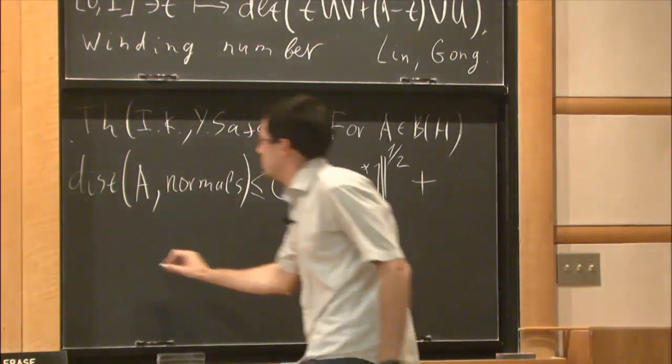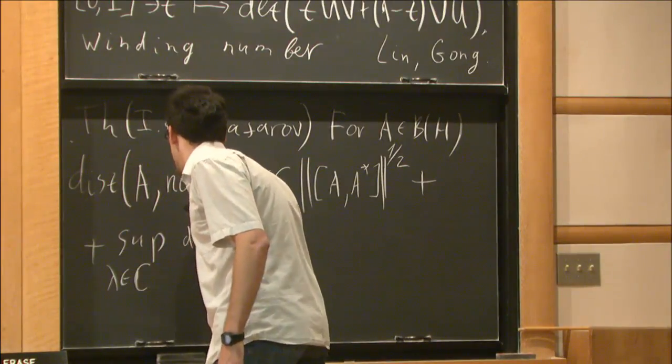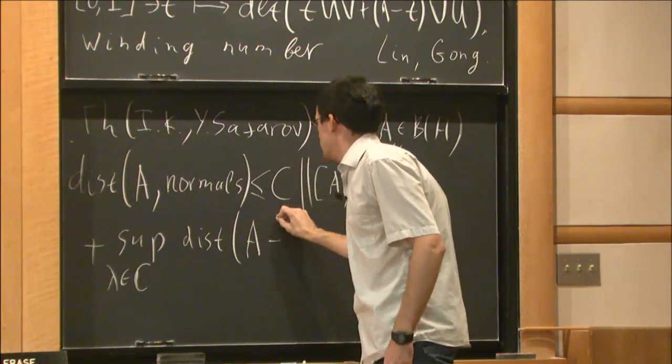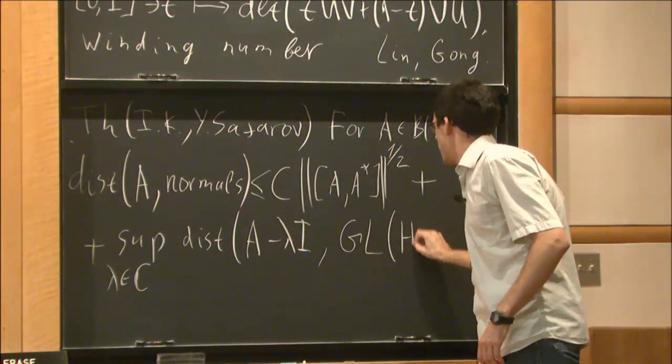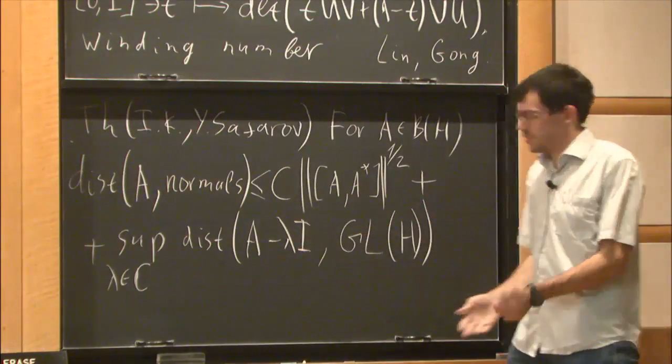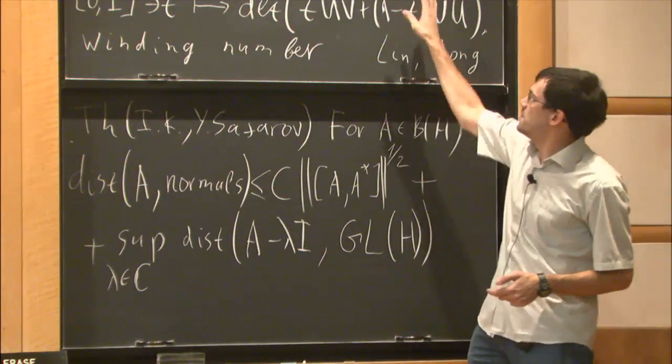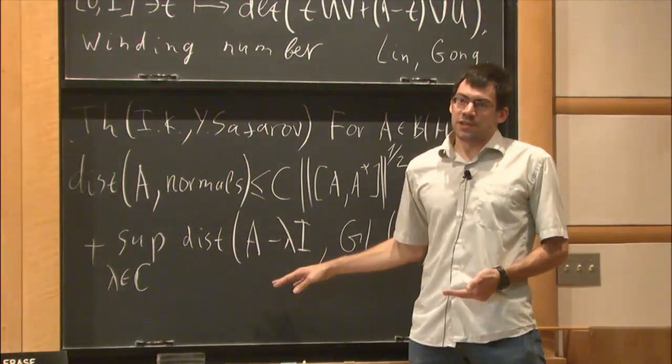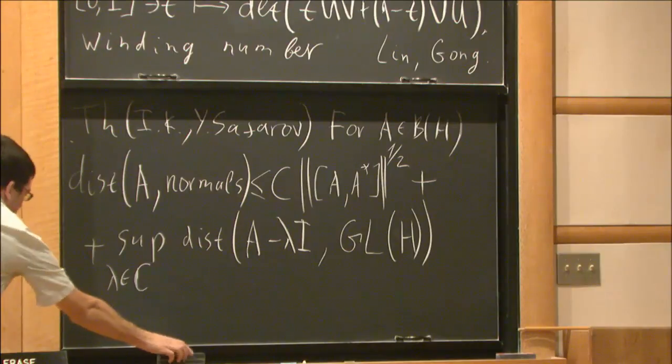This term vanishes in all previous situations except this one. It vanishes for matrices and it vanishes whenever this index obstruction vanishes. There is some geometrical interpretation of this term. Actually if you look at the spectrum of A...